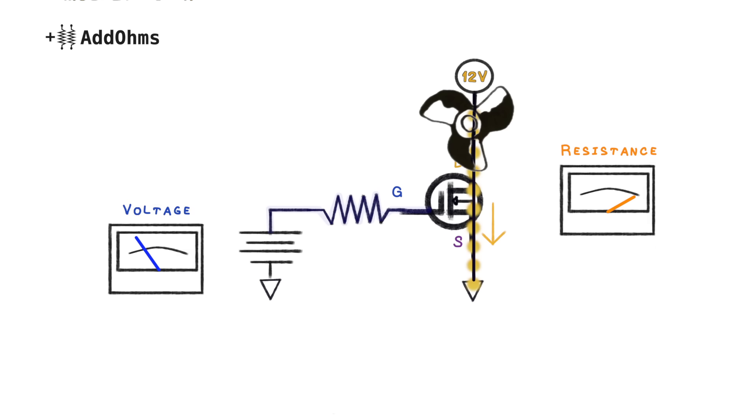As we increase the voltage at the gate, we pass a threshold voltage, and then the resistance from the drain to the source drops, and it drops very quickly. The key difference between a MOSFET and a BJT is that the output current isn't a multiplier of the input, because MOSFETs are all about voltage.